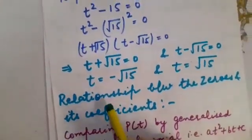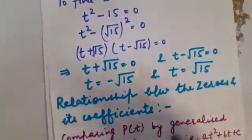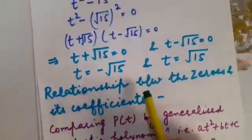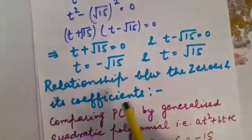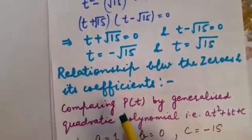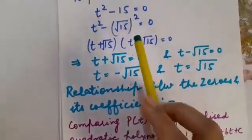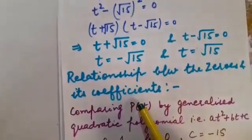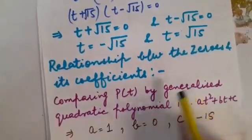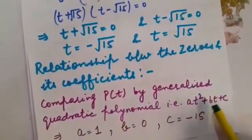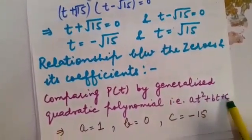Now let us check whether these zeros have any relation with the coefficients of the polynomial or not. Relationship between the zeros and its coefficients. For that children what you have to do you have to compare the given polynomial that is t² minus 15 with its generalized form. So comparing P(t) by the generalized quadratic polynomial that is at² plus bt plus c.